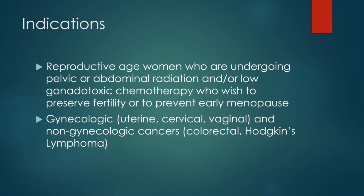Ovarian transposition involves preserving ovarian function by repositioning the ovaries out of the field of radiation. Women are candidates for ovarian transposition if they are in their reproductive years and will be undergoing pelvic radiation or low gonadotoxic chemotherapy and wish to preserve their fertility or prevent early menopause. The American Society of Clinical Oncology and the National Comprehensive Cancer Network recommend offering ovarian transposition as an option for fertility preservation in these patients.